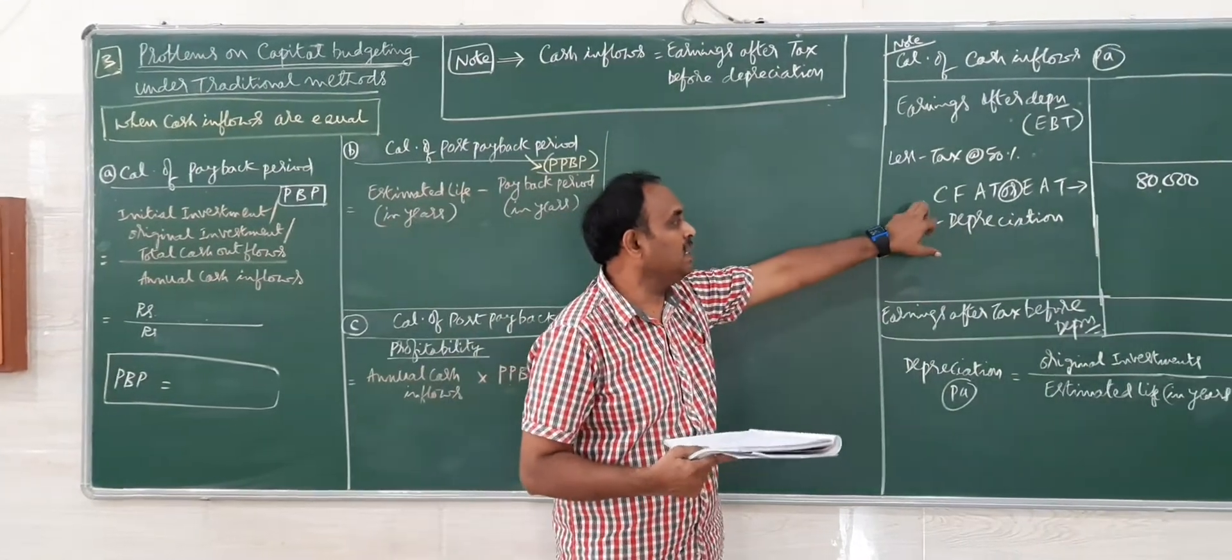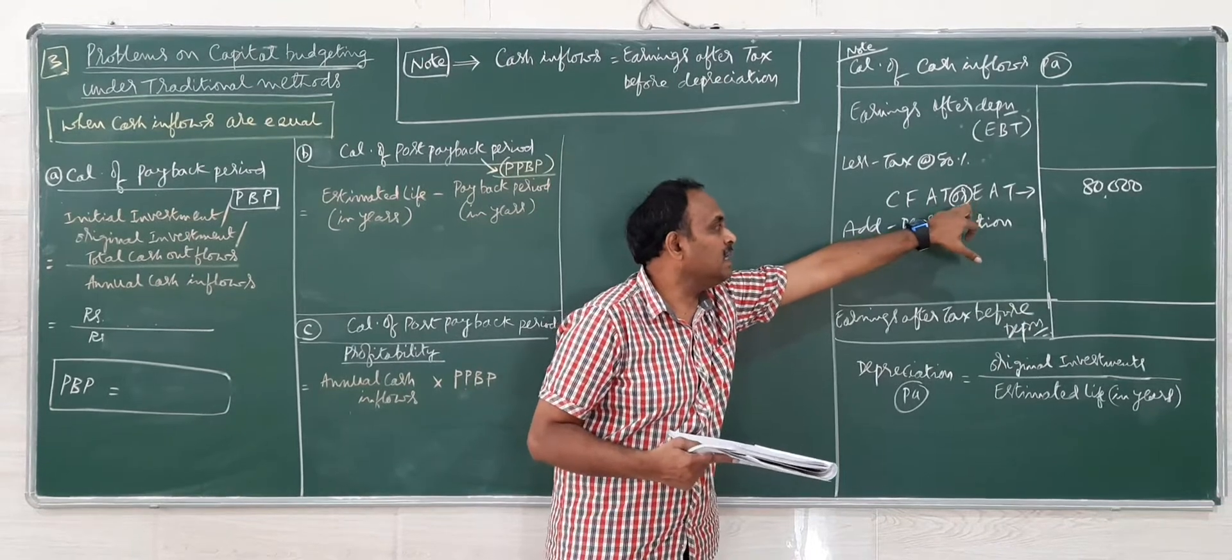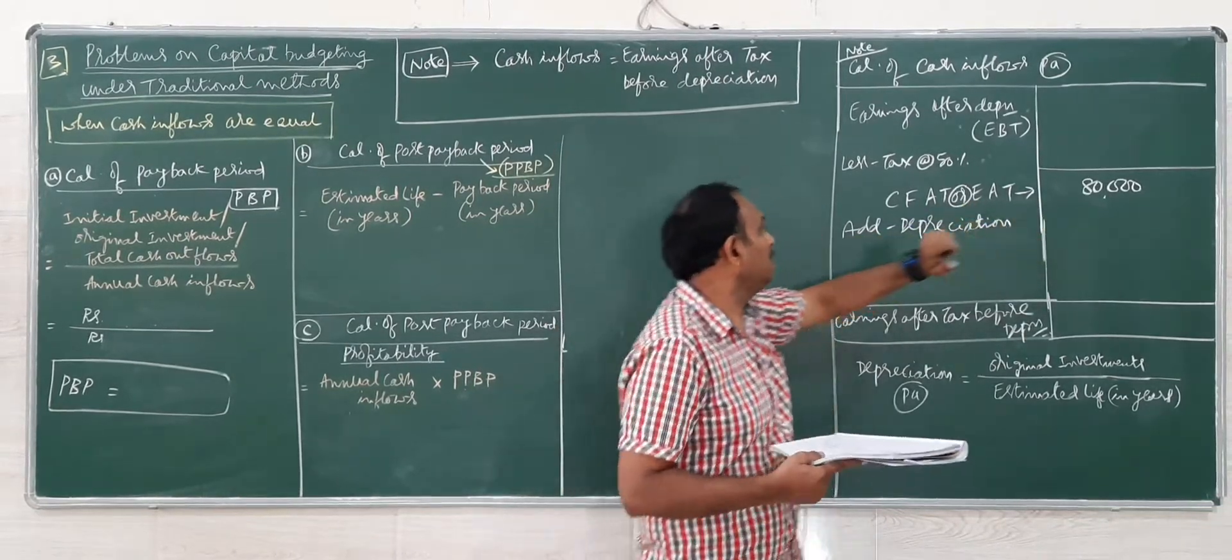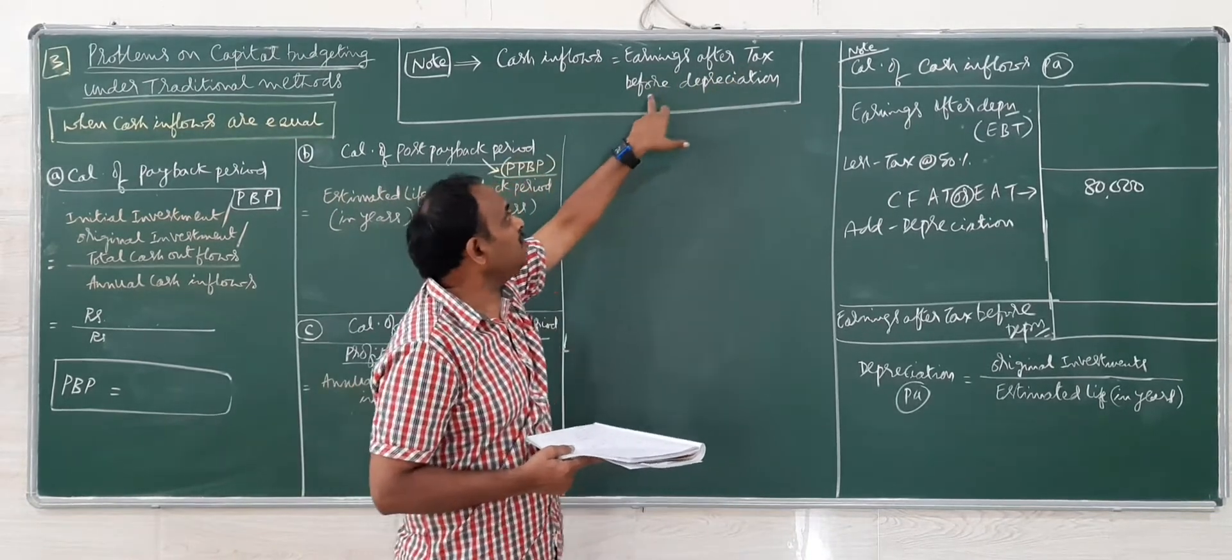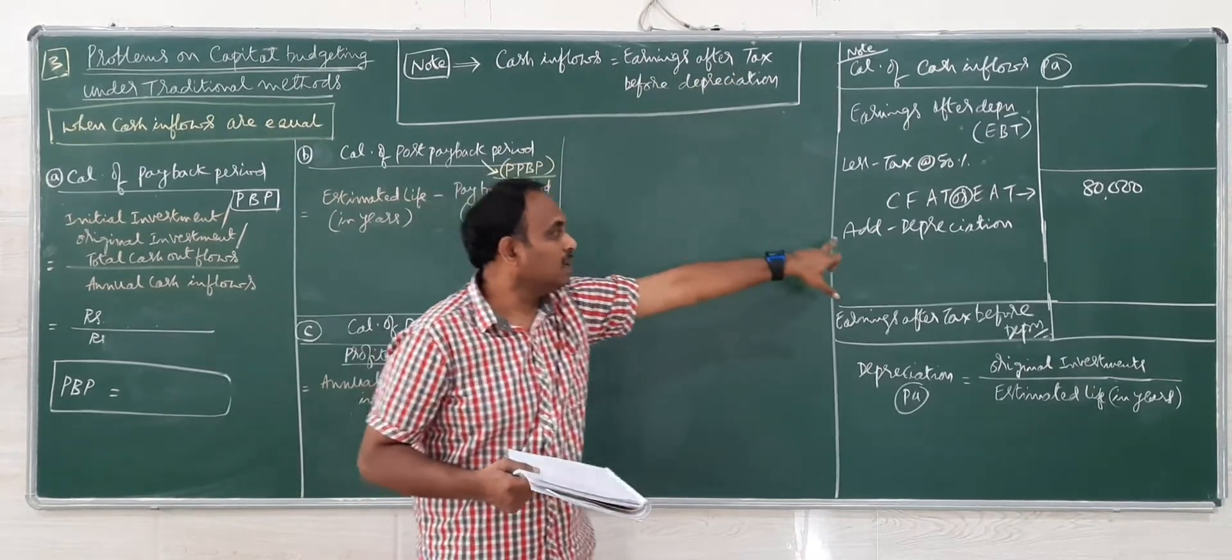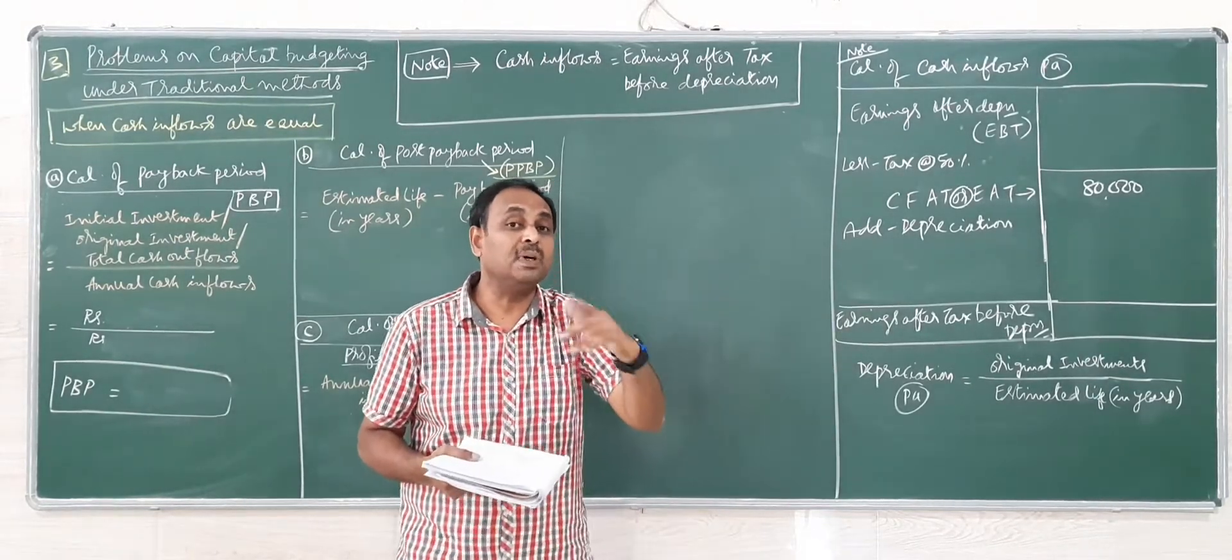As given in the problem, CF80 cash flow after tax, that is EAT, is Rs.80,000. But we want cash inflow after tax before depreciation, that means we have to add back depreciation.